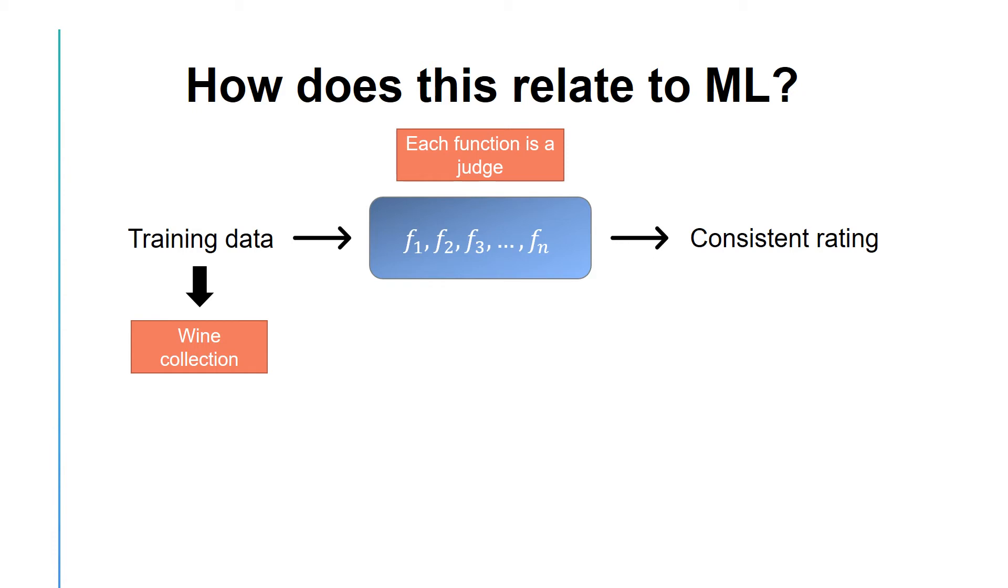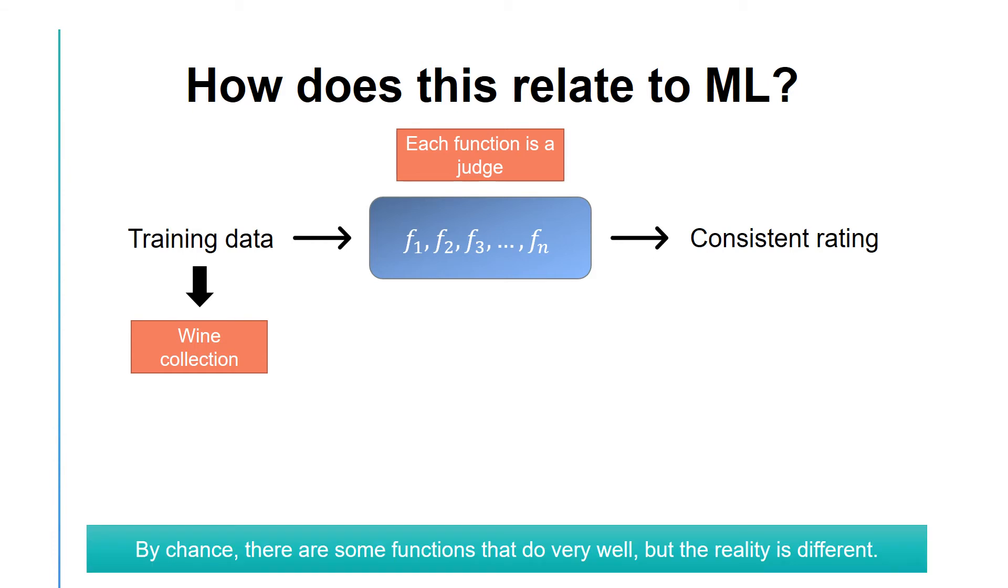Using this analogy, we can understand an important phenomenon in machine learning related to model complexity and overfitting. There are some judges or functions that perform well only by chance. In reality, they might not have a good performance in the next round. This is similar to our discussion of train and test sets. The initial wine collection was the train set, and the next year's collection that showed inconsistencies for the same judges can be considered as the test set.